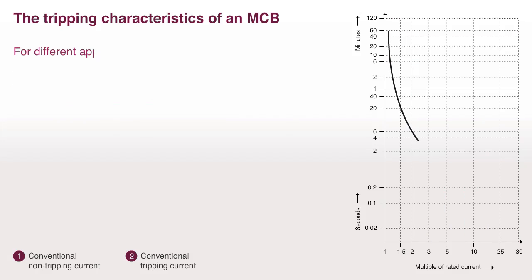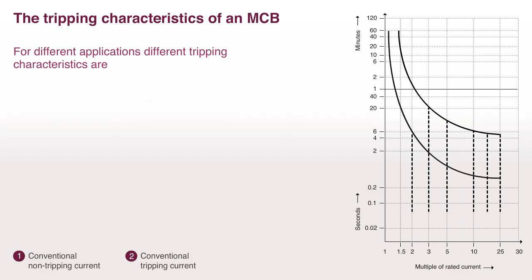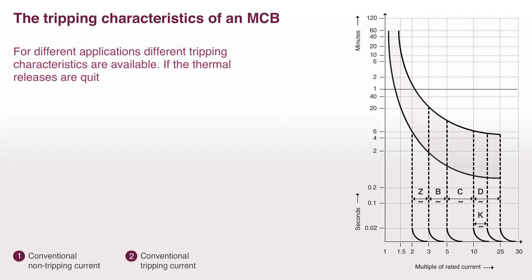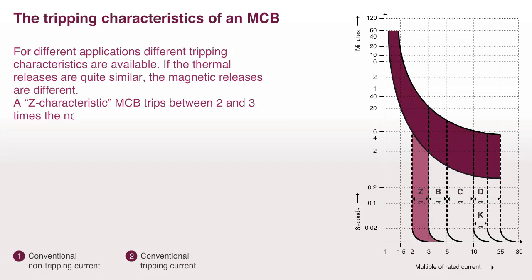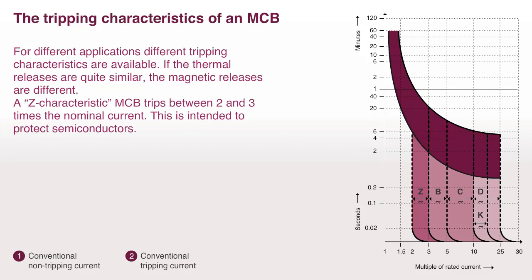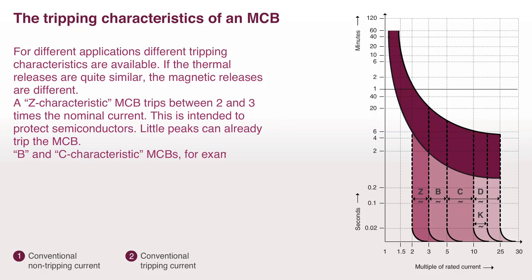For different applications, different tripping characteristics are available. If the thermal releases are quite similar, the magnetic releases are different. A Z characteristic MCB trips between 2 and 3 times the nominal current — this is intended to protect semiconductors. Little peaks can already trip the MCB. B and C characteristic MCBs are used to protect cables.